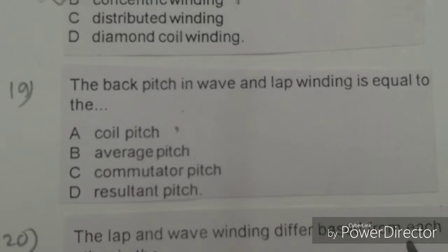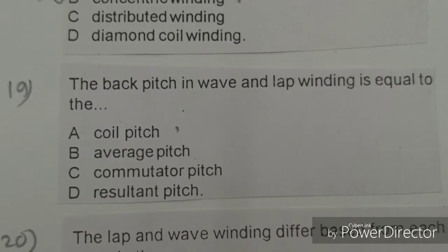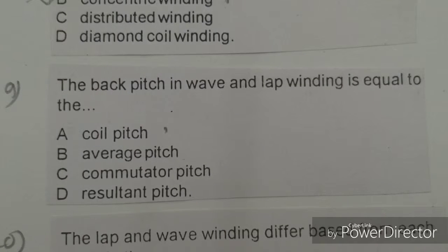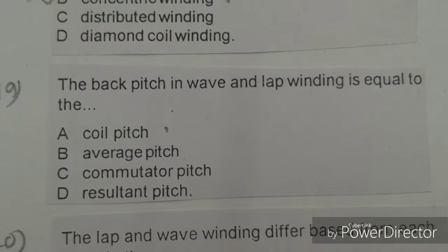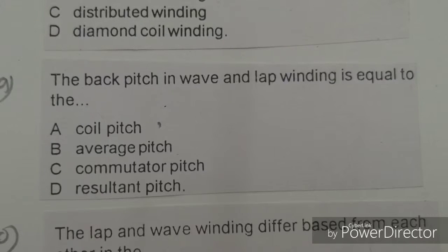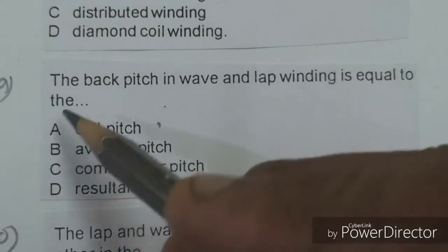Next objective: The back pitch in a wave and lap winding is equal to. Options given: coil pitch, average pitch, commutator pitch, resultant pitch. The right answer is A, coil pitch. Mark here.